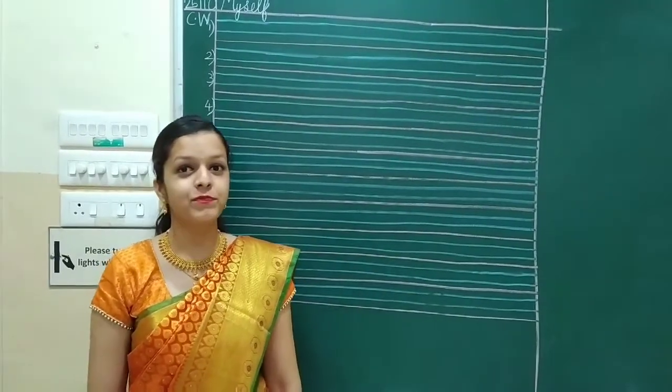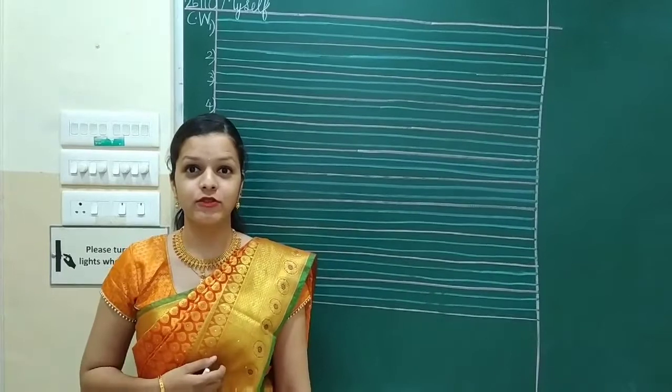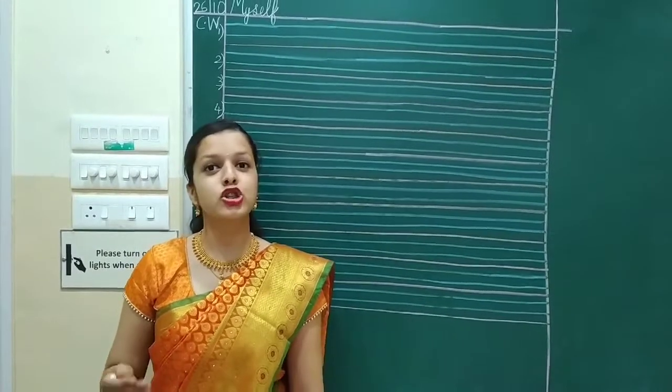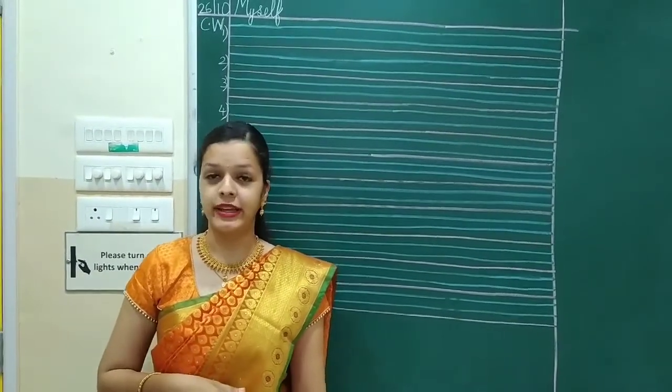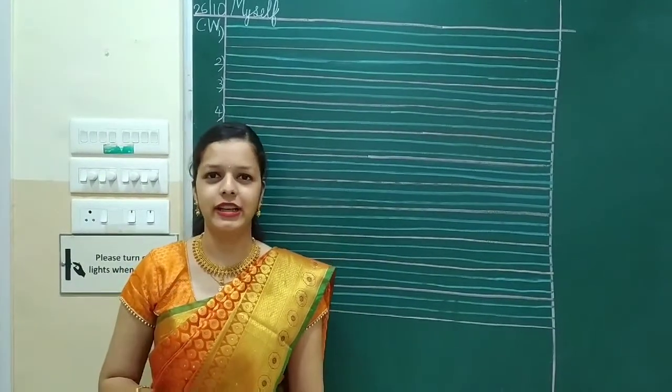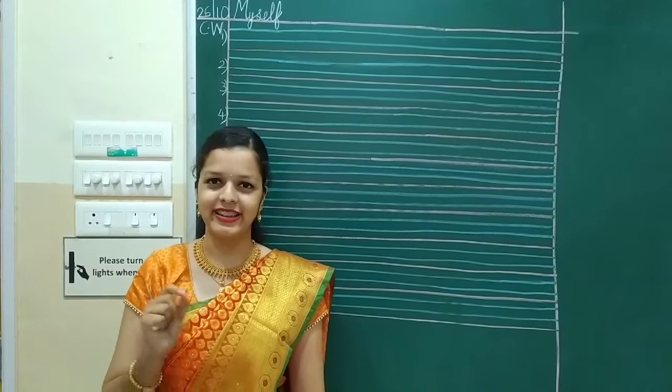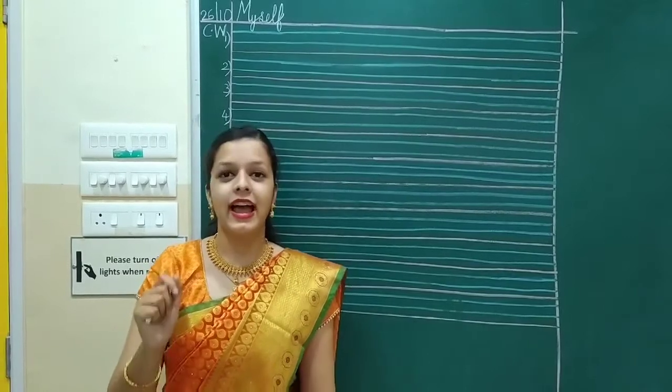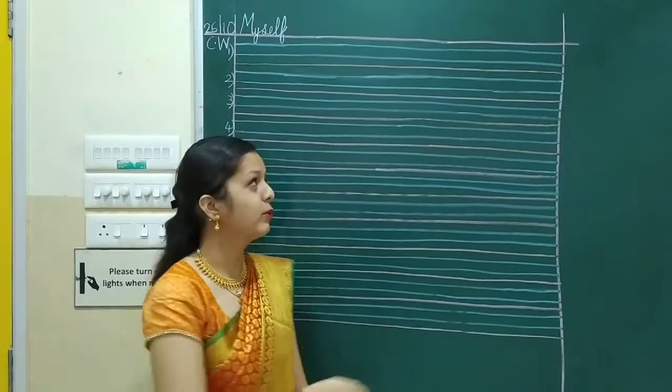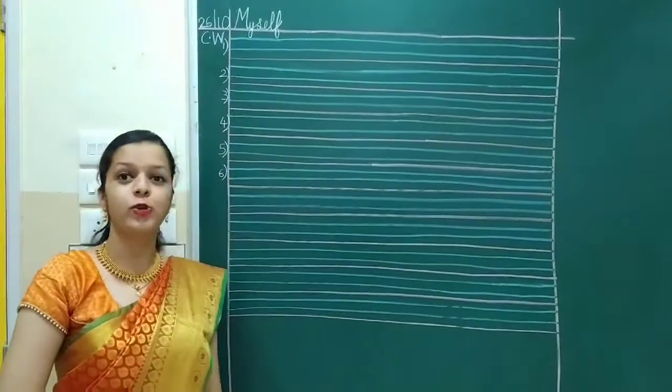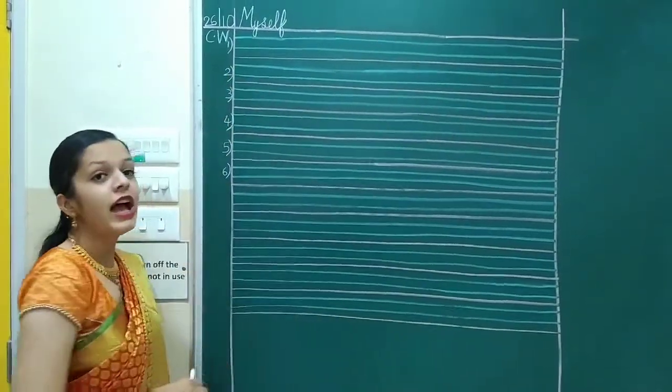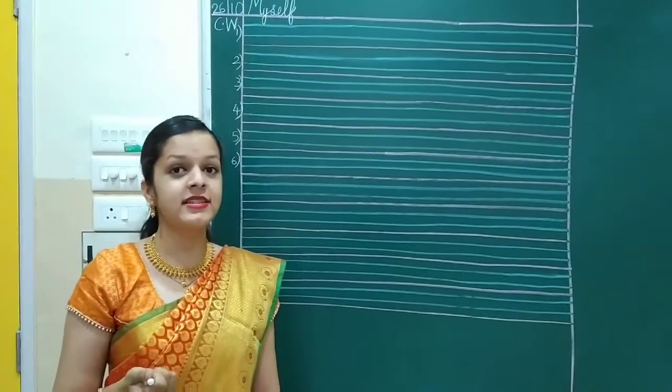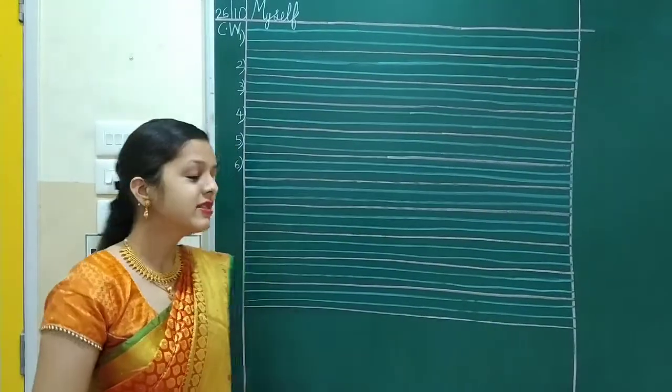So today we are going to learn myself. You know about yourself, right? Your name, your class, your school. You are a girl or a boy. But today you speak that orally. Today we are going to write the sentences in the notebook. Remove your E1 notebook and see that CW you are going to write here. So today is the date and the title you are going to write is myself. And we are going to write six sentences. How many sentences? Six sentences.